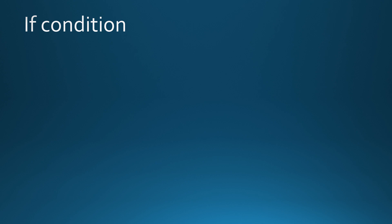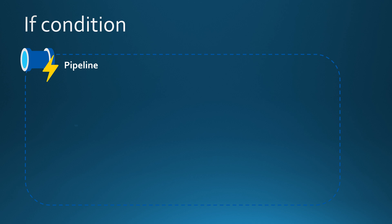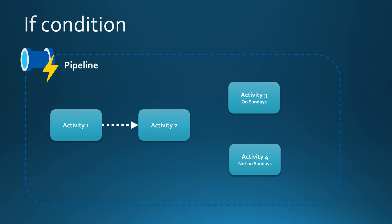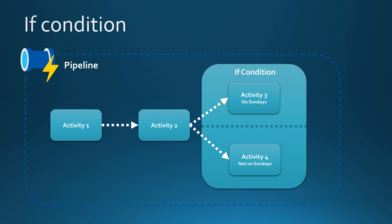Let's start with the If Condition. In today's setup we have a Data Factory pipeline with Activity 1 followed by Activity 2. After Activity 2 we have Activity 3 that we would like to run every other day than Sunday, so we don't want to run these activities on the same day. We can wrap these activities in an If Condition, which will execute them based on a condition.